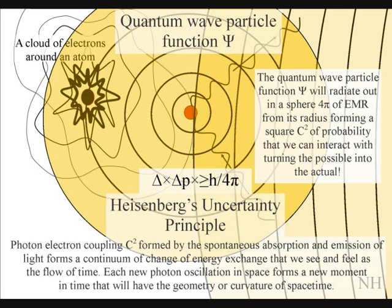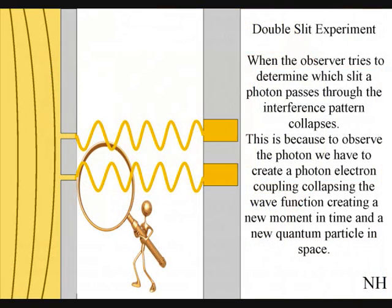This is because the new photon-electron coupling or dipole moment formed by the electronic detector represents a new moment in time — the moment of now within the reference frame of the experiment. The interference pattern has become part of the past history of the experiment, with the future of the experiment unfolding relative to the actions of the observer turning on the electronic detector.